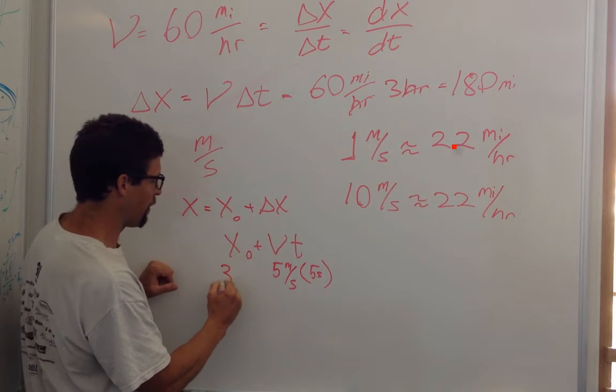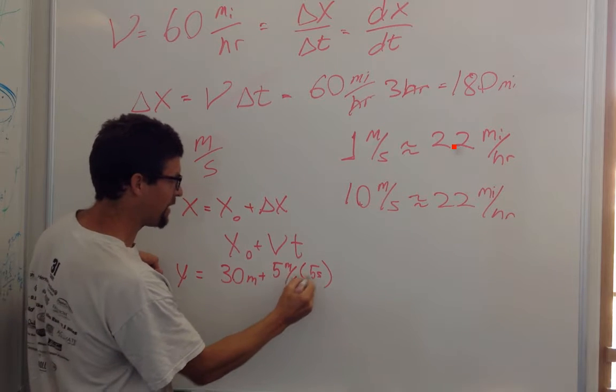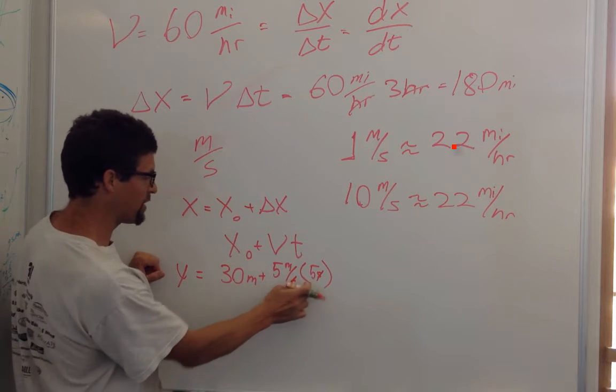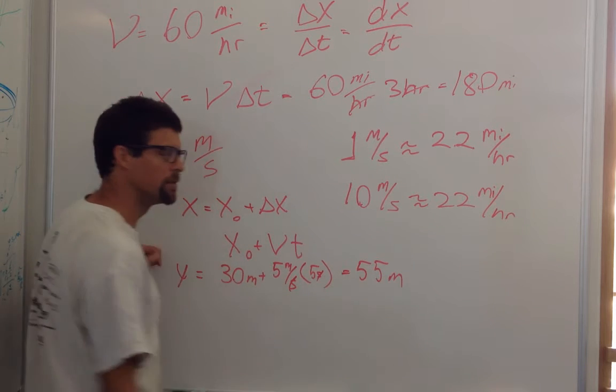And you started on the 30 meter line. You cancel the seconds. 30 meters plus 25 meters is 55 meters. I love it.